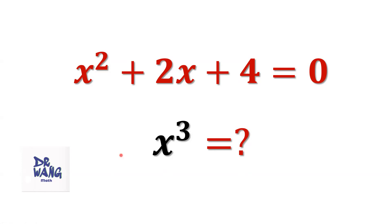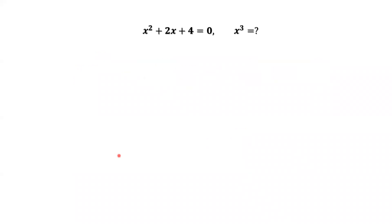This is a very simple question. x squared plus 2x plus 4 equals 0 has no real number solution. If you want to find x, the answer should be imaginary number. It is complicated. It's time consuming. We are going to use a simple method. Use the given condition only.